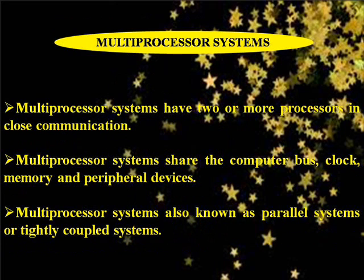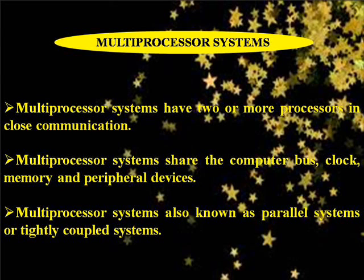Multiprocessor System. Multiprocessor Systems have two or more processors in close communication. Multiprocessor Systems share the computer bus, clock, memory, and peripheral devices. Multiprocessor Systems are also known as Parallel Systems or Tightly Coupled Systems.